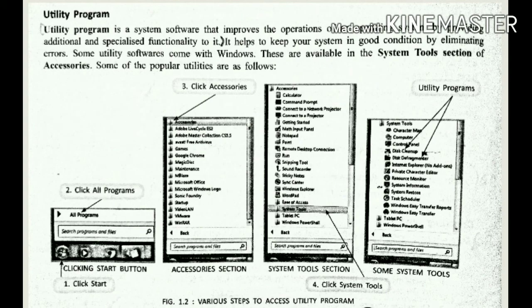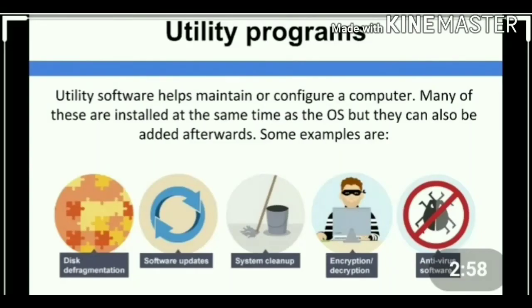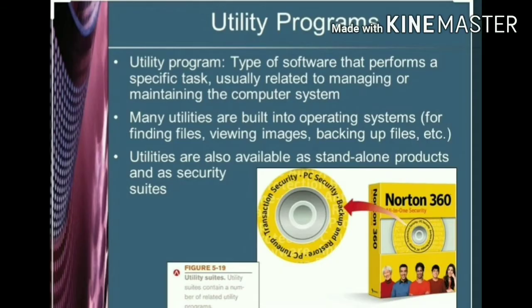Utility Program is system software that improves the operation of an operating system by providing additional and specialized functionality to it. It helps to keep your system in good condition by eliminating errors. Some utility software comes with Windows and is available in the System Tools section of Accessories. Some of the popular utilities are as follows.